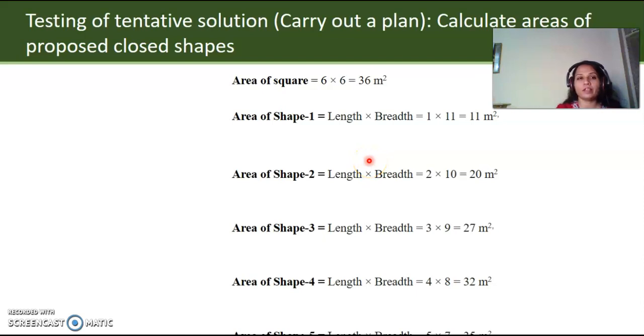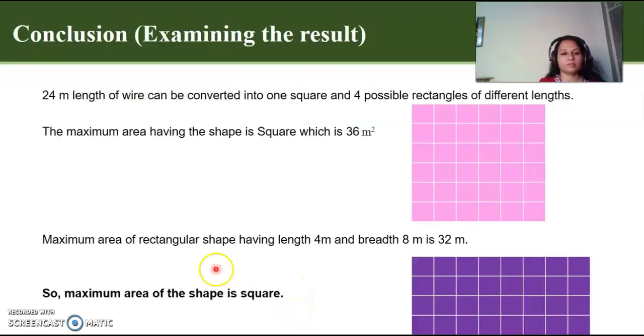So, participants, the step which we just did was testing of tentative solutions, that is, carrying out a plan. In this plan, what we did, we calculated the areas of proposed closed shapes. So, here is the working of the areas.